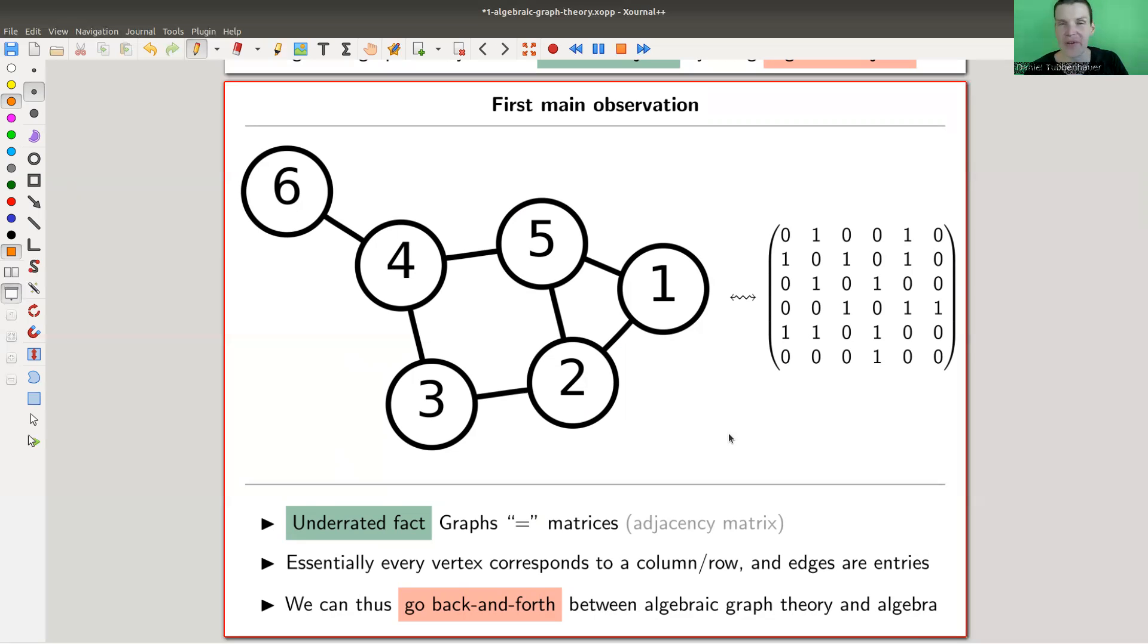Matrices are part of linear algebra, graphs are part of combinatorics. The relationship between graphs and matrices is between combinatorics and linear algebra. The way that it works is you just number your vertices 1, 2, 3, 4, 5, 6, and this corresponds to numbering your rows and columns. Then you just look at the connections.